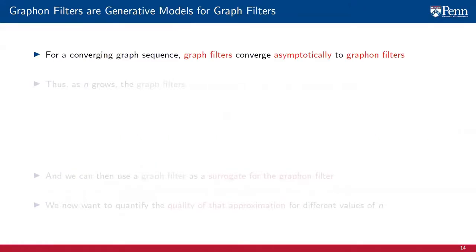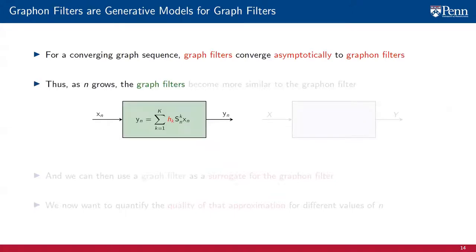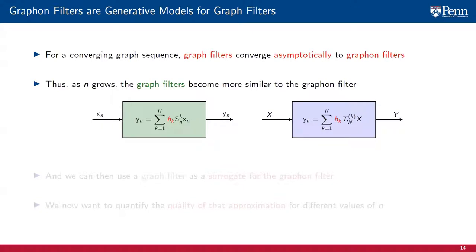In the last few lectures, we saw that for convergent graph sequences, the eigenvalues of the graph converge to the eigenvalues of the graphon. Moreover, as the frequency response of both graph and graphon filters are polynomials instantiated on the eigenvalues of the graph or graphon, this implies that the frequency response of graph filters converge asymptotically to the frequency response of a graphon filter. As the number of nodes in the graph, n, grows, the graph filters become more and more similar to the graphon filter. That suggests that we can use graph filters as approximations for the graphon filter, not asymptotically, but for a graph with a finite number of nodes n.